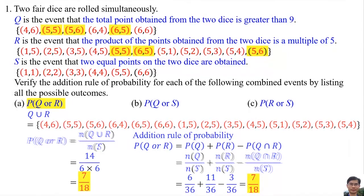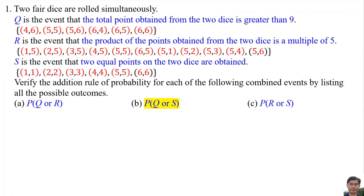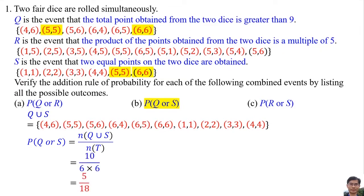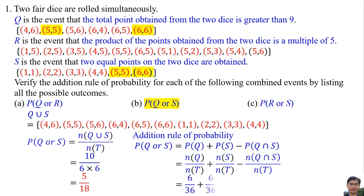For the probability of Q or S, the common elements for Q and S are (5,5) and (6,6). Q or S is Q union S, so we copy all elements in Q and all elements in S except the common elements. The probability of Q or S is 5/18. The addition rule of probability also gives 5/18, confirming the result.